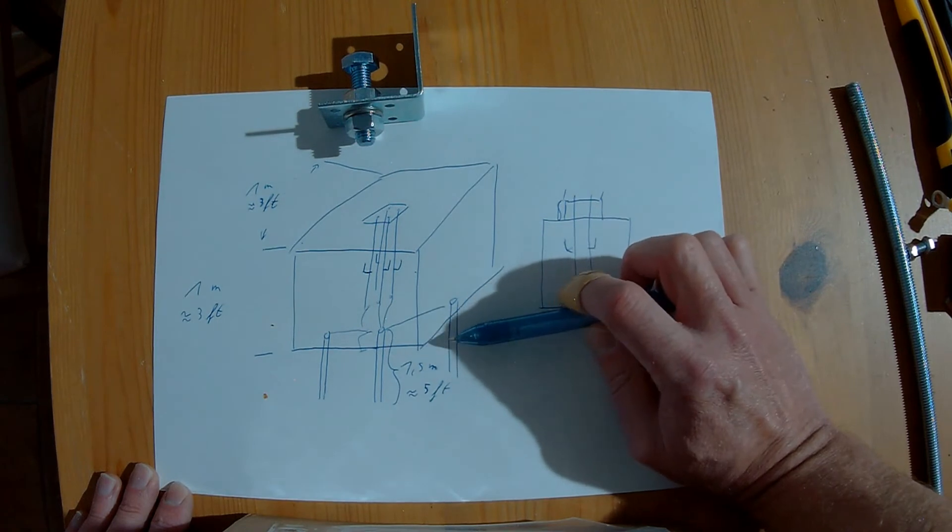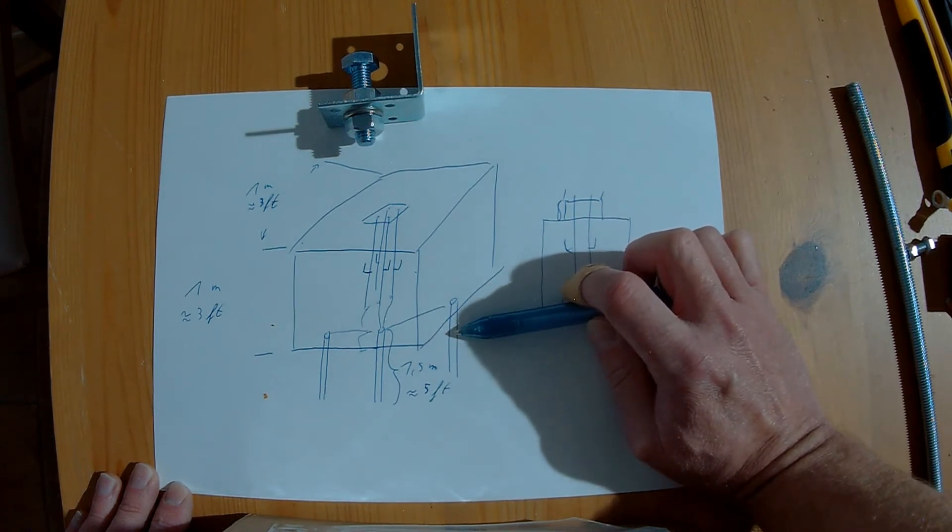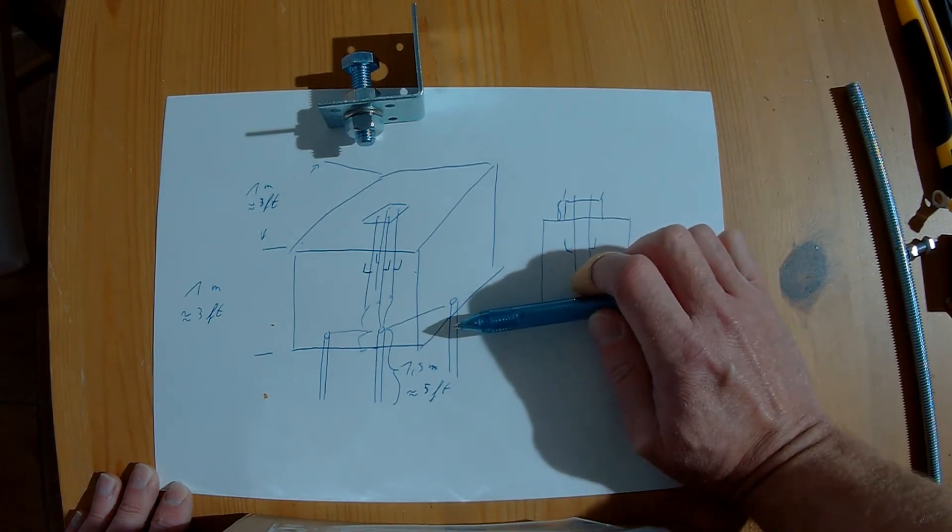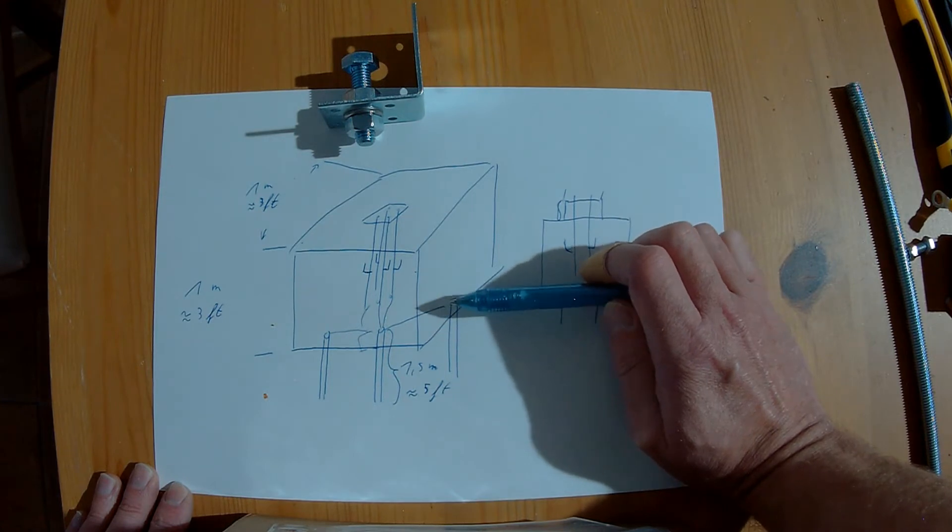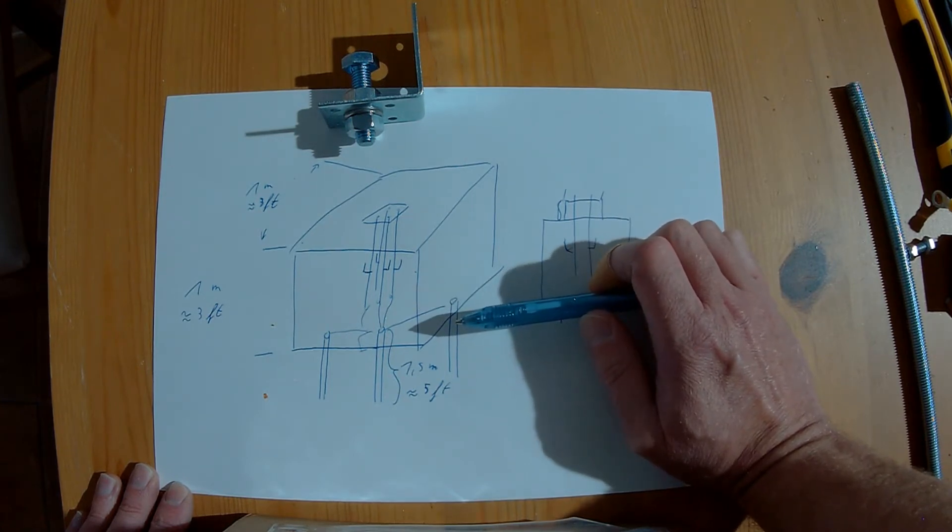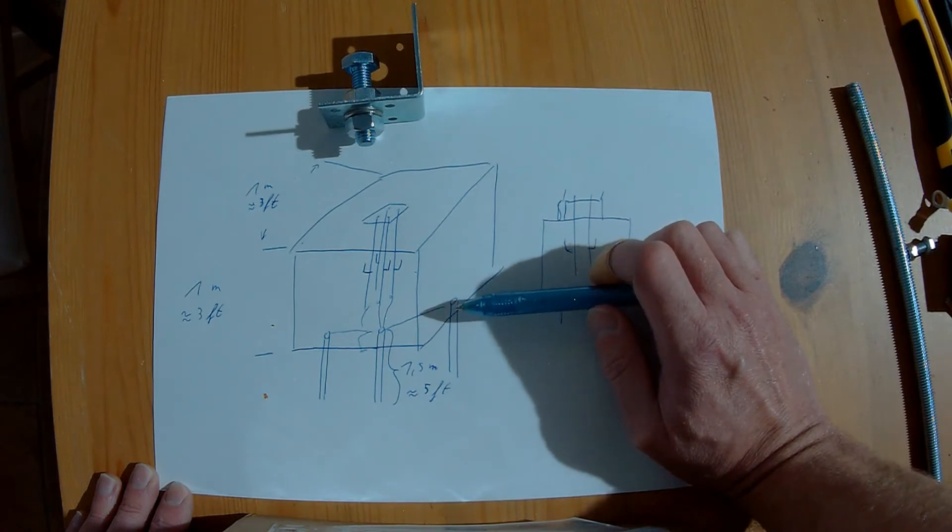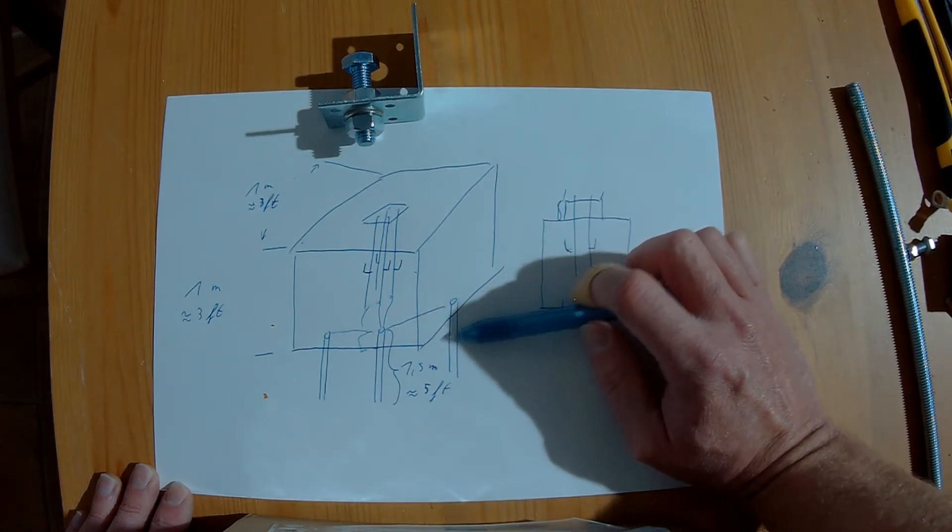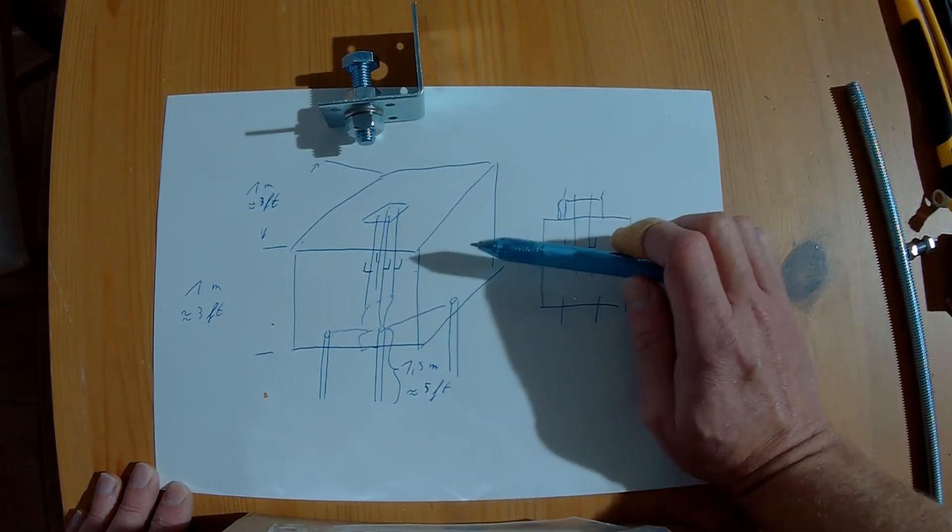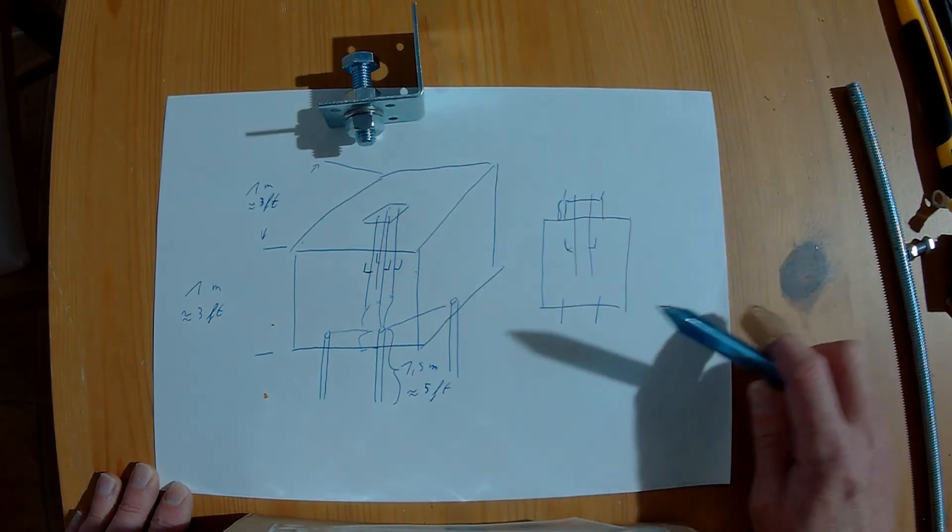As a material I use by the way stainless steel, because at my location the water table is extremely high. And it's salty as well. I do have salt water in the ground. And so this is the reason why it's not galvanized. It's stainless steel at my location. Maybe it's not necessary on your side.